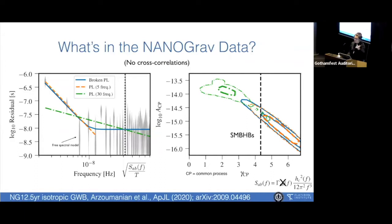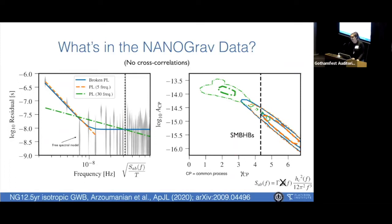We have the first of two signals that we need to detect in order to claim a detection of the background. Supermassive black holes are not the only thing that can generate a stochastic background. There could also be cosmic strings, with a spectral index over here, and also gravitational waves from inflation. Those things could also source nanohertz gravitational waves in the pulsar timing array band. Right now, supermassive black holes are considered to be the primary candidate.